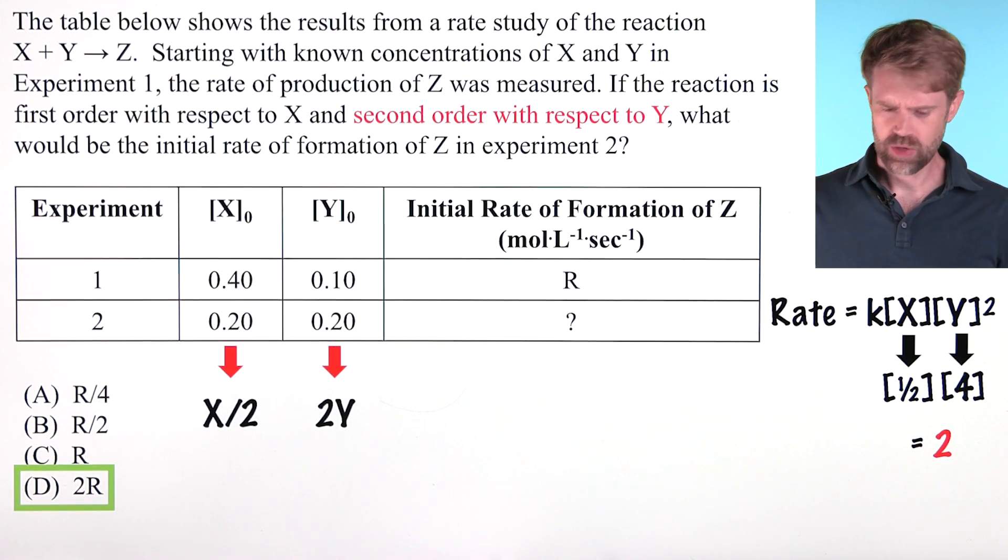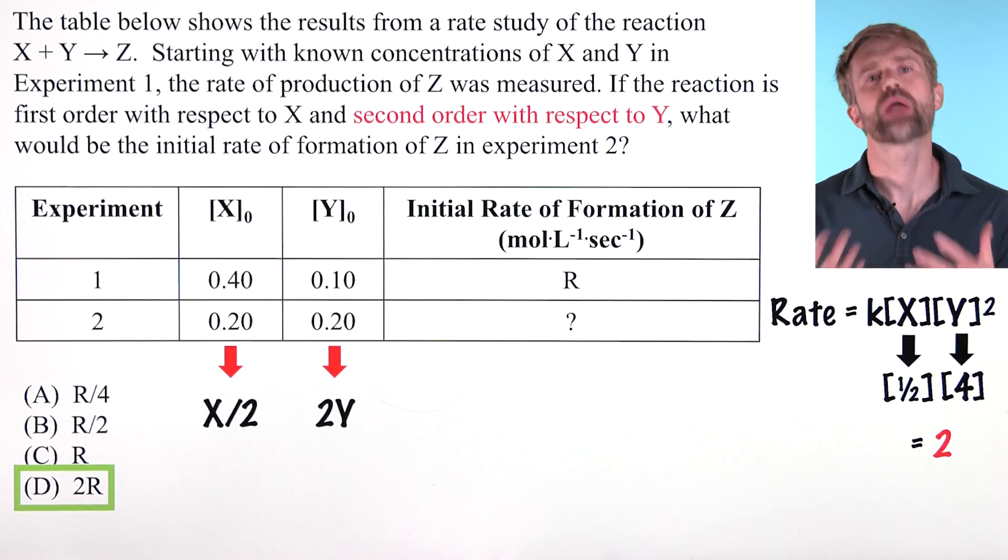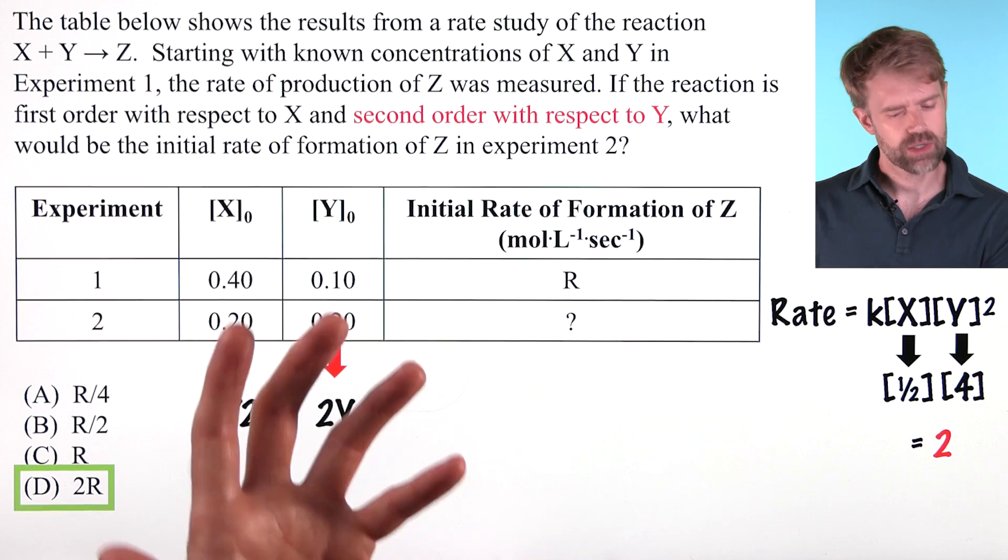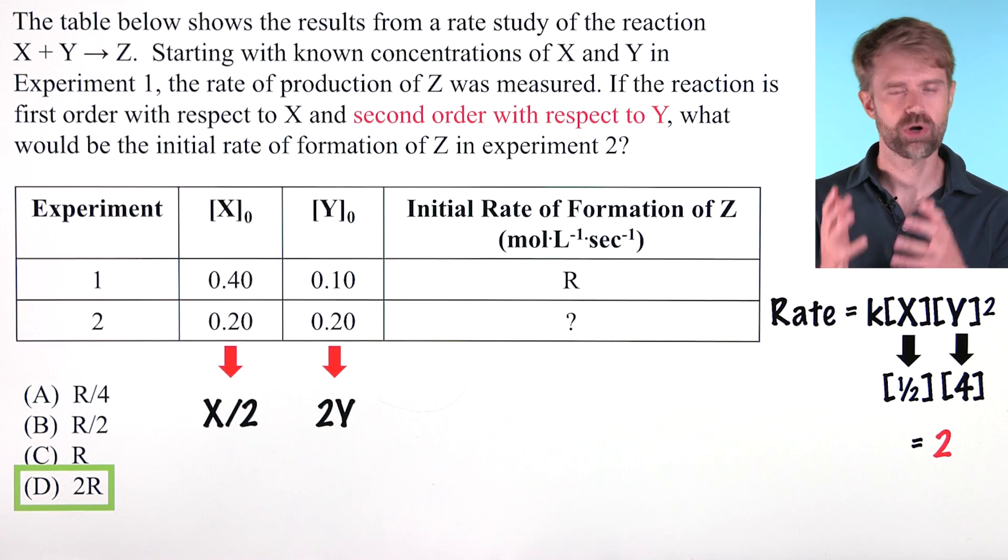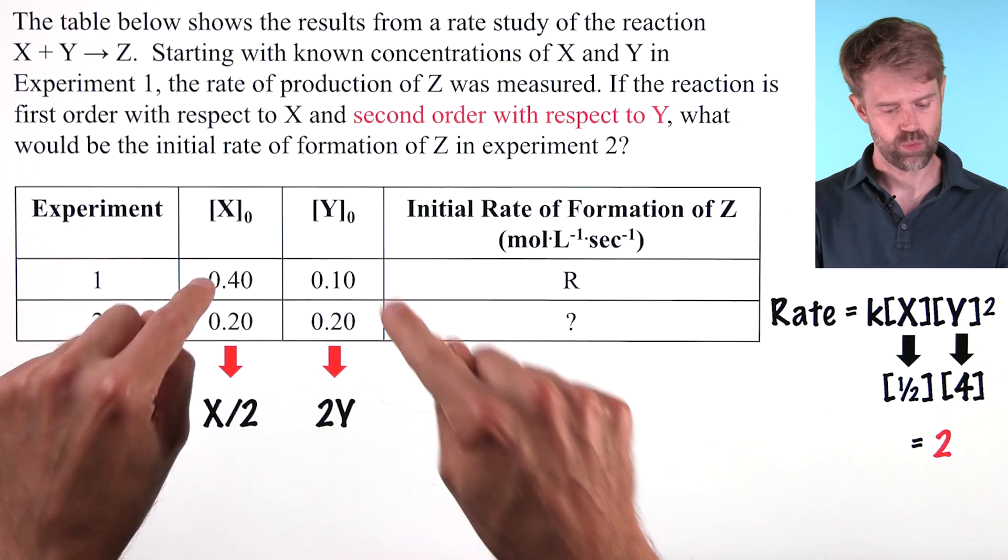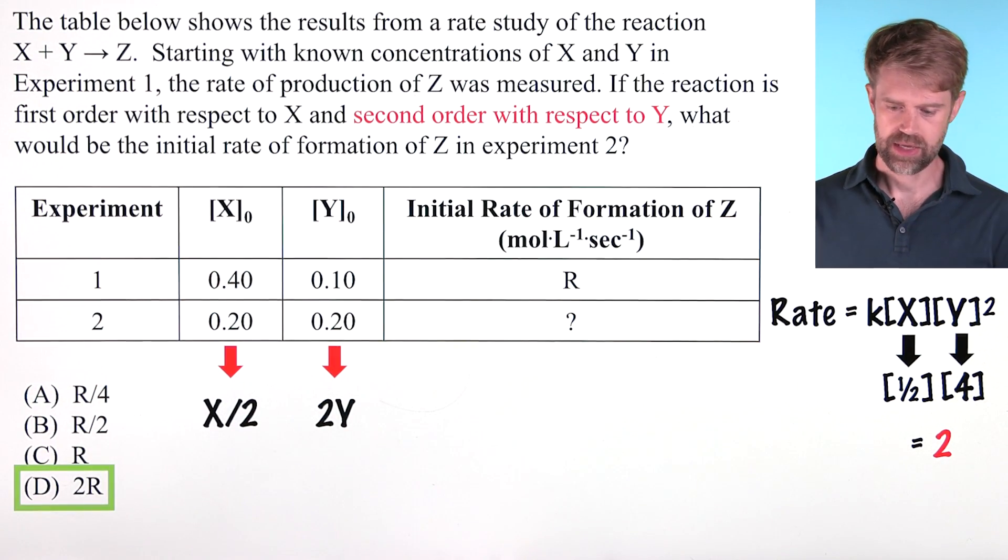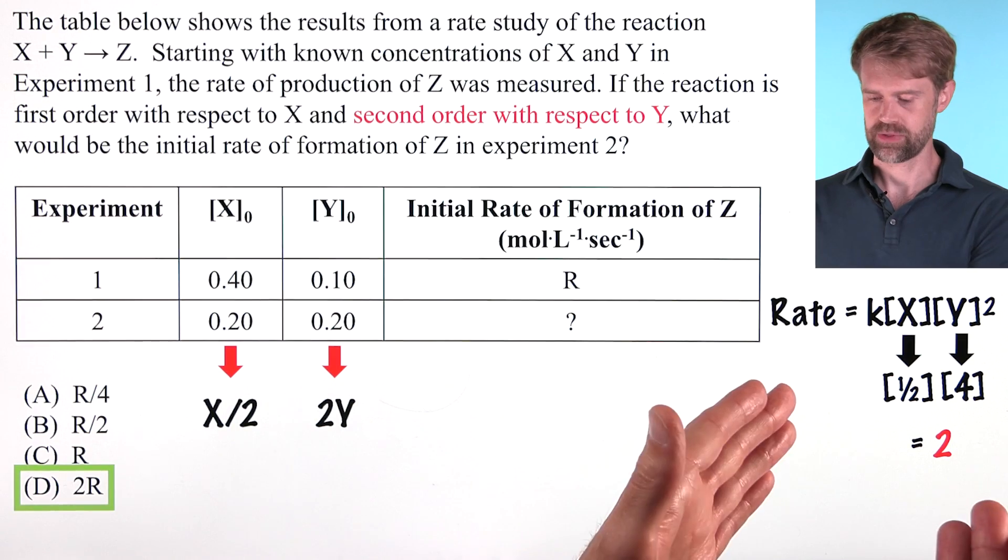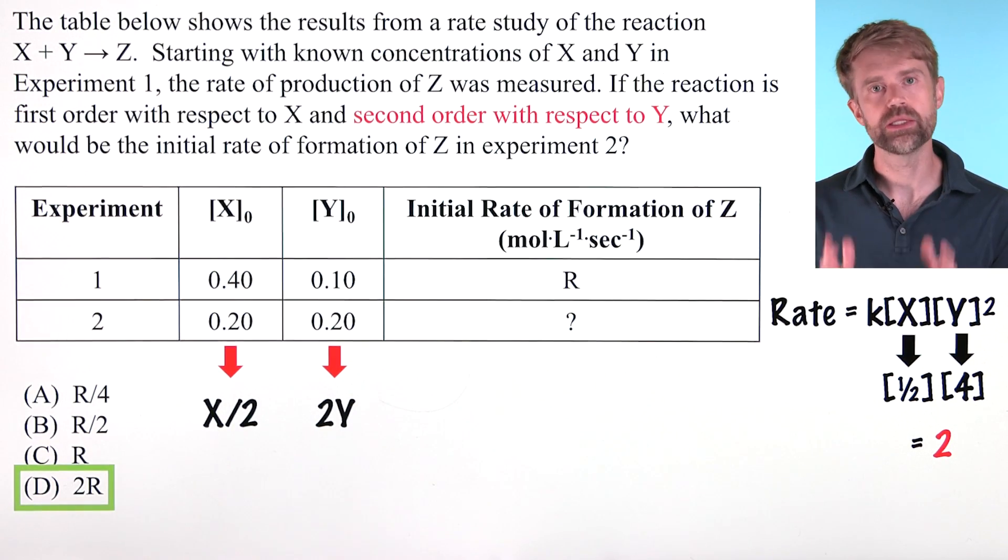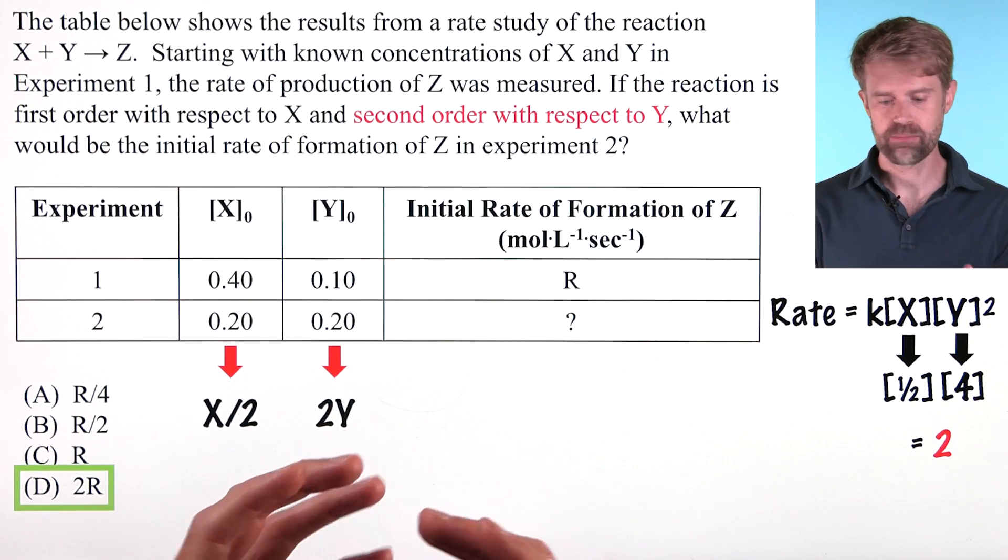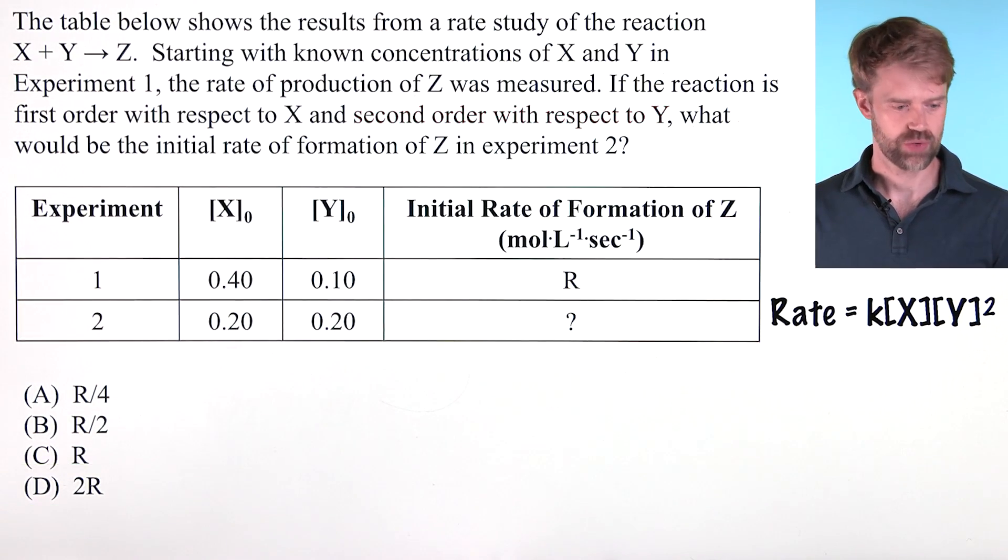Now, this method that we worked through is okay, but it's a shortcut. The math isn't perfectly clear, and it gets particularly hazy when two reactants change as opposed to just one. If you use a logic method like this, make sure you really understand what you're doing. Otherwise, here's some techniques that are a little bit more methodical and straightforward.